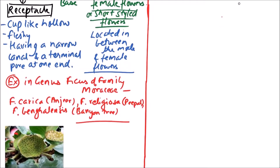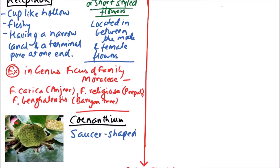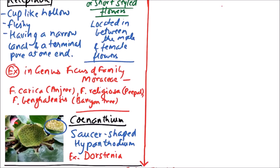There is a special type of inflorescence which is a modification of hypanthodium — the synanthium. Synanthium is a saucer-shaped hypanthodium. We can observe this saucer-shaped hypanthodium in the diagram. The example includes Dorstenia. So this is the hypanthodium and synanthium inflorescence.